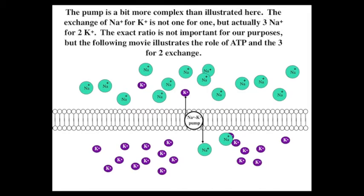The pump is a bit more complex than illustrated here. The exchange of sodium for potassium is not one for one, but actually three sodiums for two potassiums. The exact ratio really isn't important for our purposes, but the following movie illustrates the role of ATP and the three-for-two exchange.